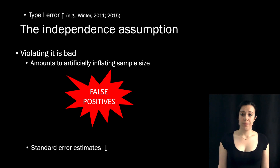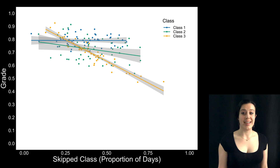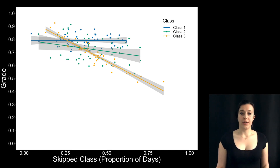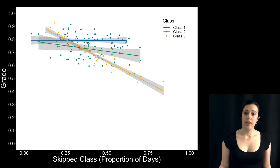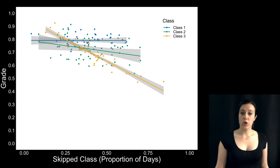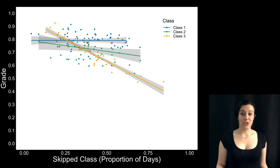So in our skipping class example, if we use standard regression, we'd be violating the independence assumption because the observations within each class are correlated. Specifically, in the simulated data, there is no correlation between skipping class and grade in class one, there's a negative correlation in class two, and a large negative correlation in class three. The observations aren't independent — those coming from the same class are more similar to one another than those coming from different classes. That means we can't just run a standard regression on these data, show that skipping class hurts your grades, publish it in Science, and call it a day.